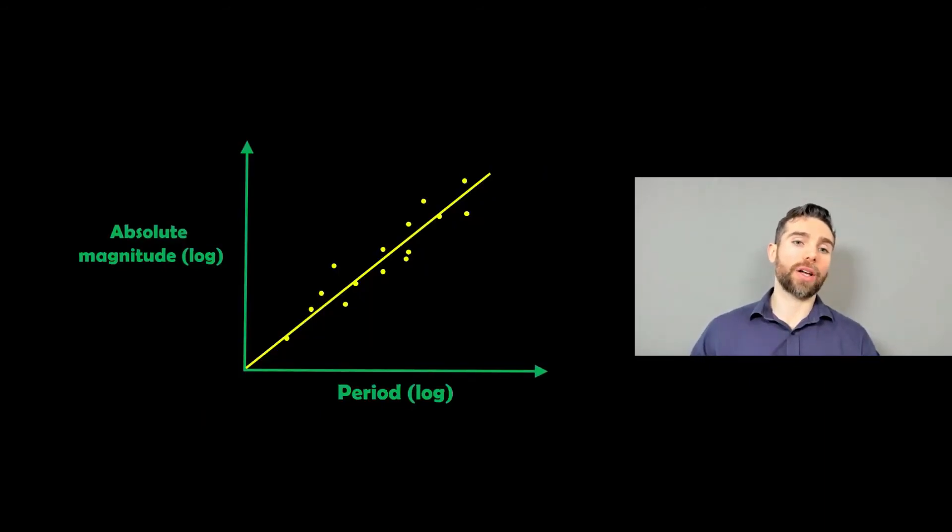Once we've got that light curve, we can quite easily calculate a period. So the time between the maximum brightness and the next maximum brightness will give us our time period, which is the cycle it takes to do one pulsation. And there's a relationship between the period of these pulsating stars and their absolute magnitude. So what we can do is we can measure that period, we then look at this graph here, we go up to the yellow line, which is the trend, and then we go across to find out what its absolute magnitude would be. So once we have the absolute magnitude, we can then calculate a distance to it.